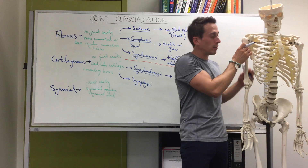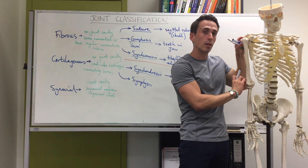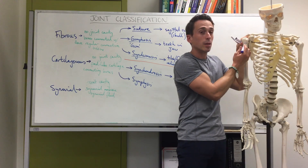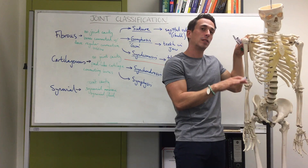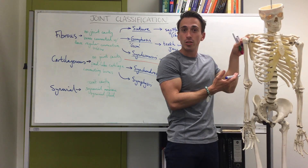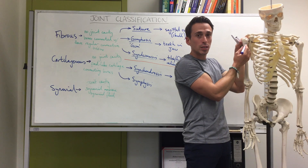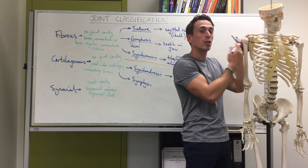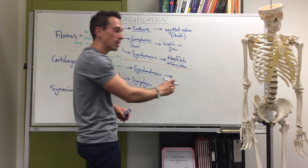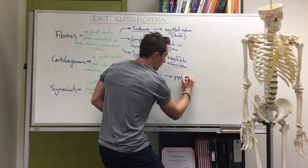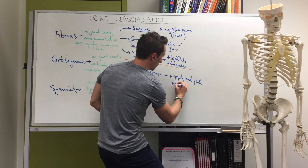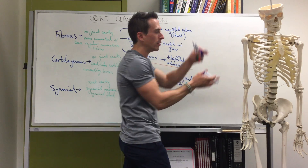At either end of a long bone you have a proximal and a distal epiphysis. At the epiphysis there is a line called the epiphyseal line — also known in younger people as the epiphyseal plate or growth plate. This growth plate is made of hyaline cartilage which helps secrete cartilaginous material that ossifies into bone and helps grow the long bone. Therefore, a synchondrosis is the epiphyseal plate, also known as the growth plate — that is cartilage embedded within bone.